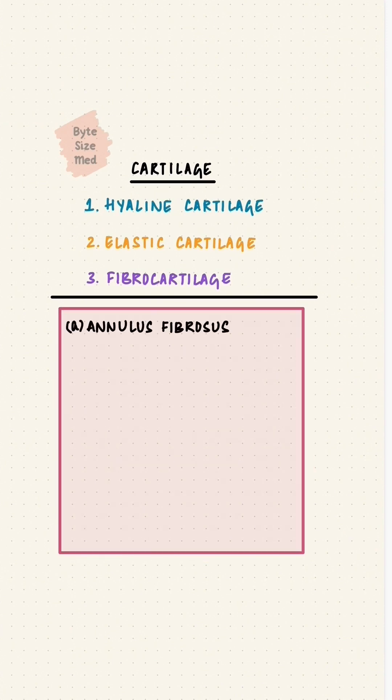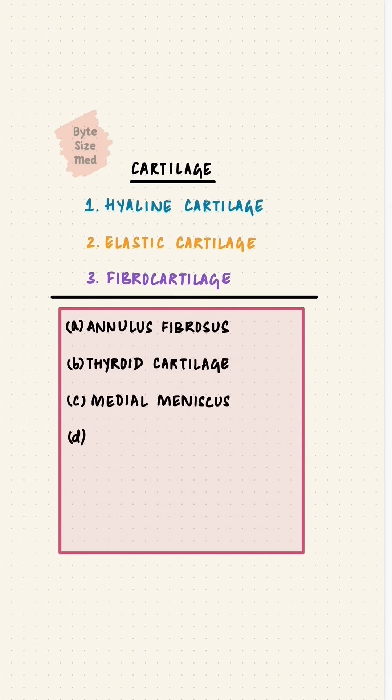The examples are: annulus fibrosis, the thyroid cartilage, medial meniscus, the auditory tube, the epiphyseal growth plate, and the epiglottis.